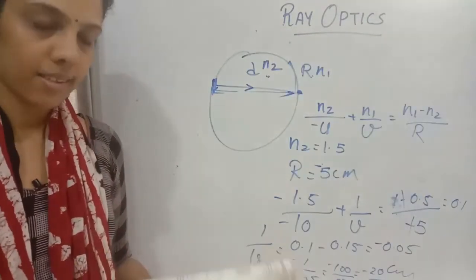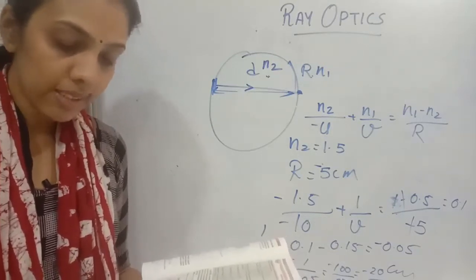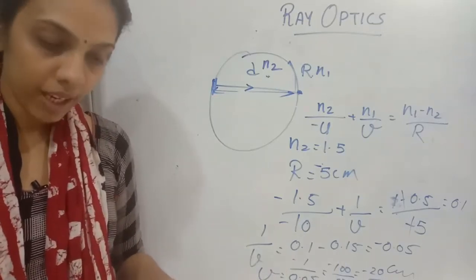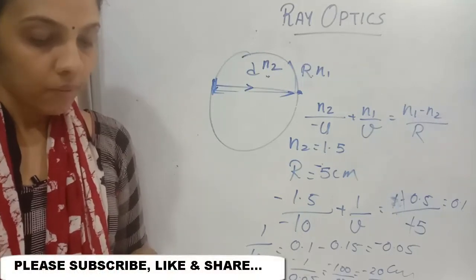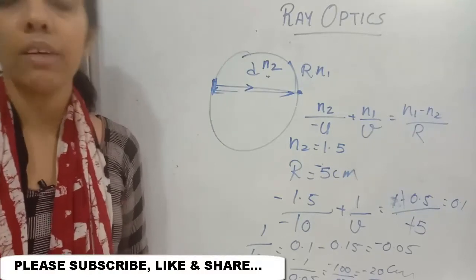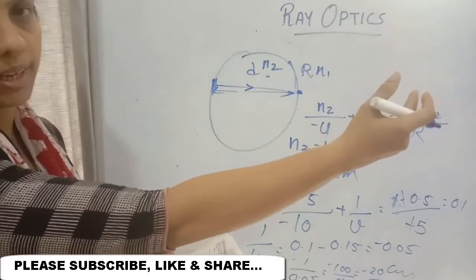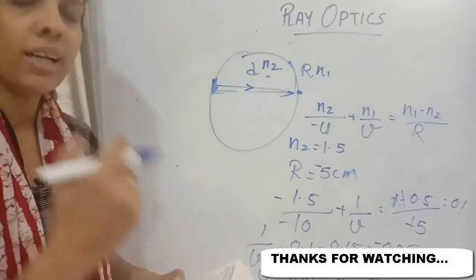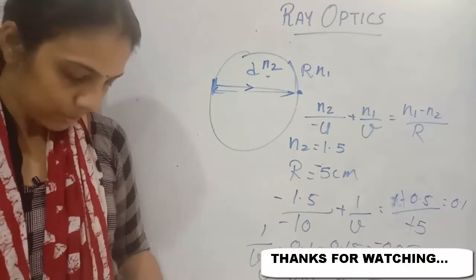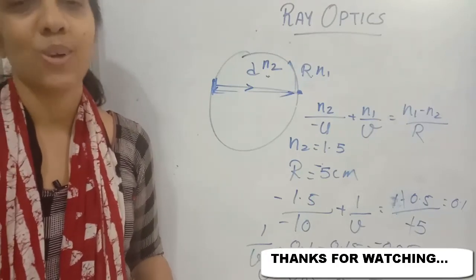Here is a homework question: an empty spherical flask of diameter 15 centimeters is placed in water of refractive index 4 by 3. A parallel beam of light strikes the flask. Where does it get focused when observed from within the flask? Since we are observing from within the flask outward, it will be from denser to rarer medium. Try to solve it — the answer should be minus 22.5 centimeters. Thank you.